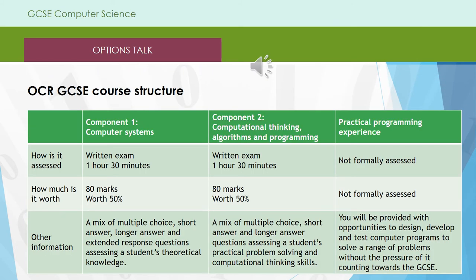The grid on the slide in front of you shows you how the OCR GCSE course is structured and assessed. Component 1 covers computer systems and you study and sit a written examination for 1 hour 30 minutes, worth 80 marks and 50% of your final GCSE qualification. Component 2 covers computational thinking, algorithms and programming. Again, it's a written examination for 1 hour 30 minutes, also worth 80 marks and 50% of your final GCSE qualification.